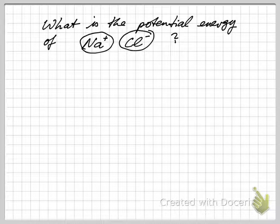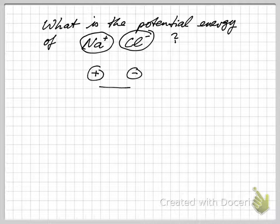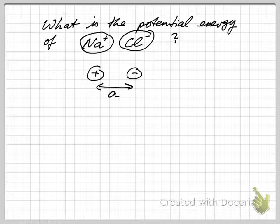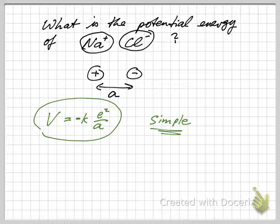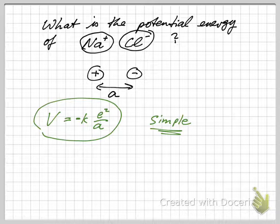The sodium has given up its outermost electron and given it to the chlorine. Chlorine really wanted it, and the sodium 3s electron was only loosely bound to the sodium, so it is happy to give it up. What is the potential energy of such a situation?